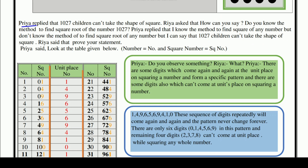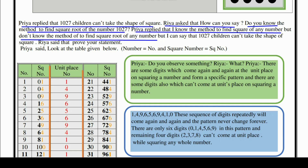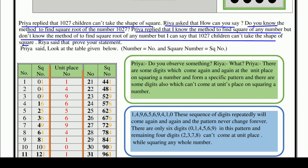But Priya replied that 1027 children can't take the shape of a square. Riya asked, how can you say that? Do you know the method to find the square root of 1027? Priya said she knows how to find the square of any number, but does not know how to find the square root. Yet she can say that 1027 children cannot form a square.